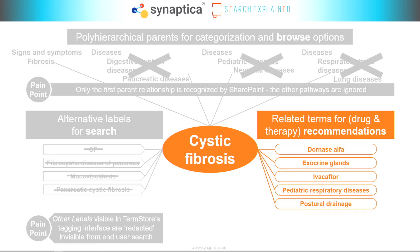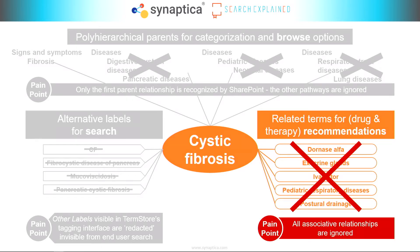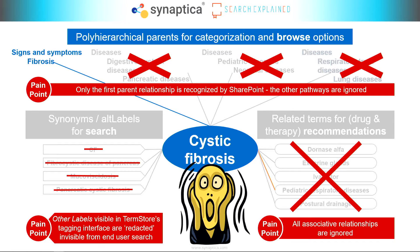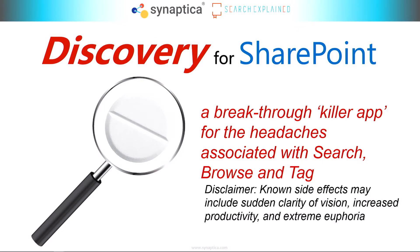Now let's look at associative relationships. Related in the Cengage thesaurus to cystic fibrosis are other things. They don't belong in a pathway; they're not alternative labels. But they are incredibly useful for recommending other content and information. We're dealing with things like drugs and therapies. It would be very useful when looking at content about cystic fibrosis to know about related therapies and drugs. But what happens is they all go. The vast majority of things simply disappear. And we have been living with this for years.